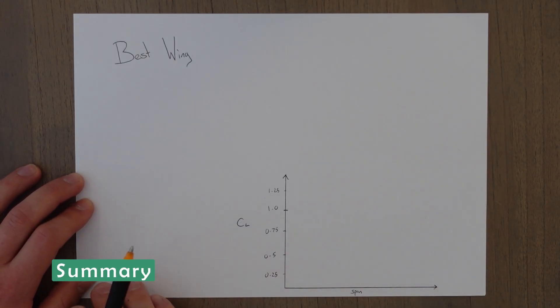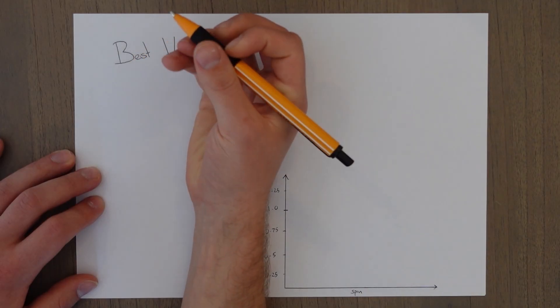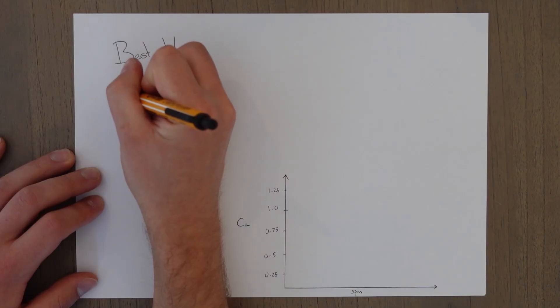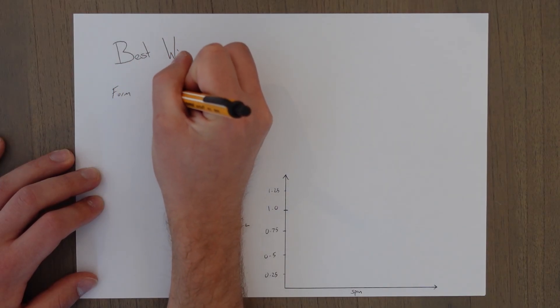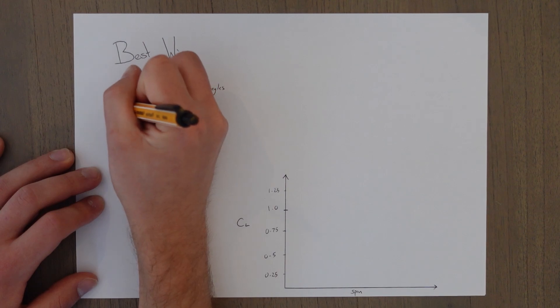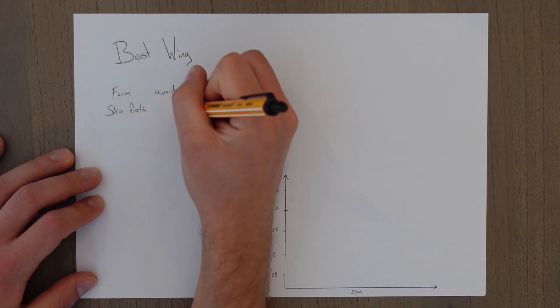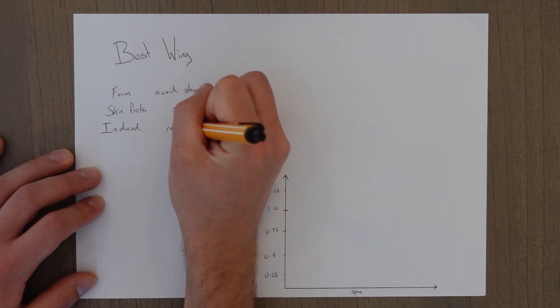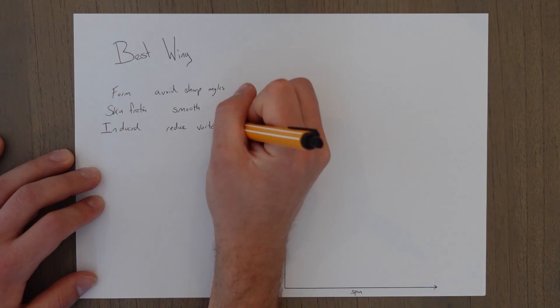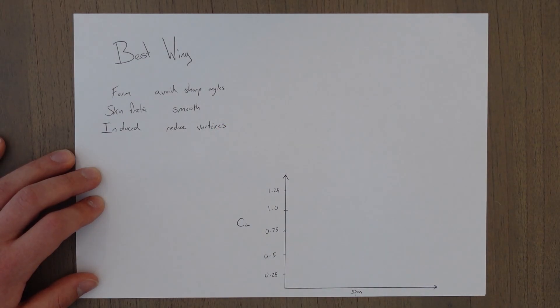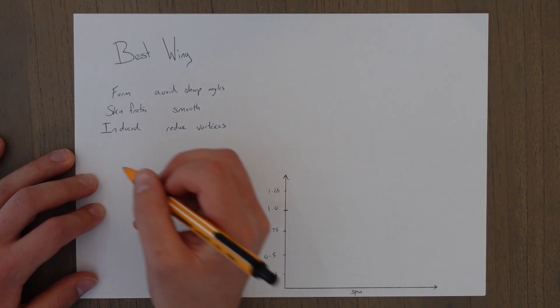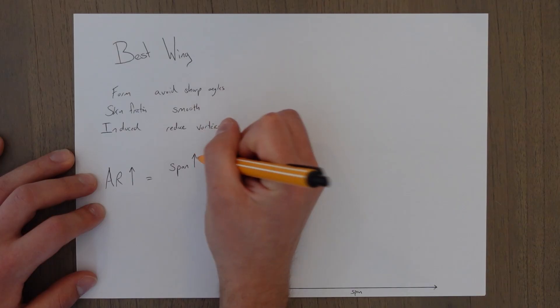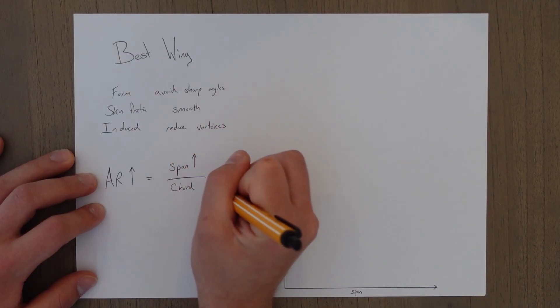So to summarize. The best wing design produces the correct amount of lift for the least amount of drag. So to reduce our form drag we avoid sharp angles. To reduce our skin friction drag we make everything smooth. And to reduce our induced drag we reduce our vortices. How do we reduce our vortices? Well first, we increase the aspect ratio which means we increase our span or we reduce our chord length.